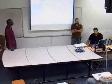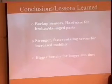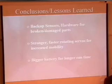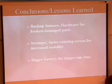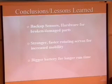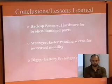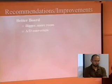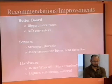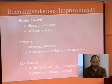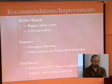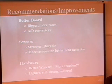In conclusion, it would be better if we had backup sensors on the robot so it could fall back on something if it gets stuck. We need stronger rotating servos because they move too slow given our robot design. Bigger batteries would also help since we would only run it five to ten minutes before the batteries started dying and the robot moved even slower. Recommendations include a bigger board, A-to-D converters to operate the infrared sensors we had in mind, and stronger sensors overall.